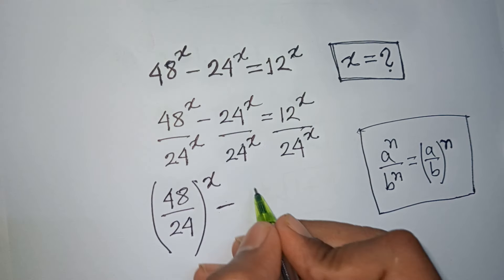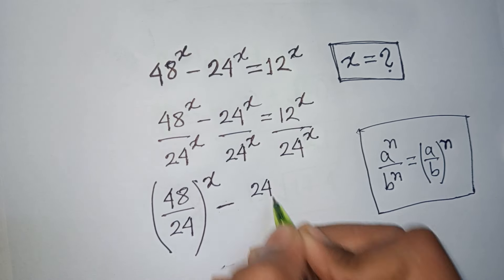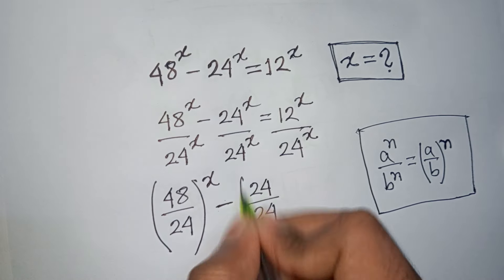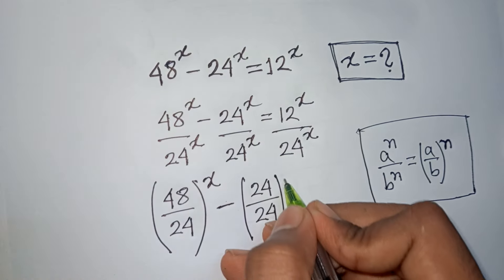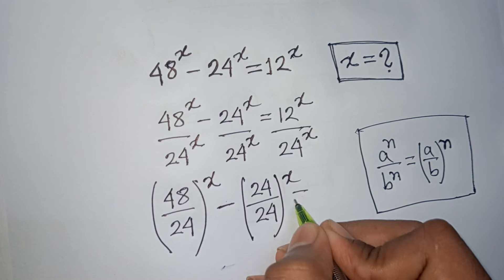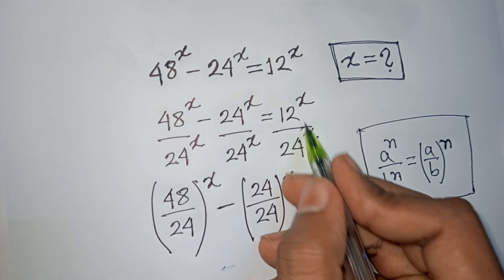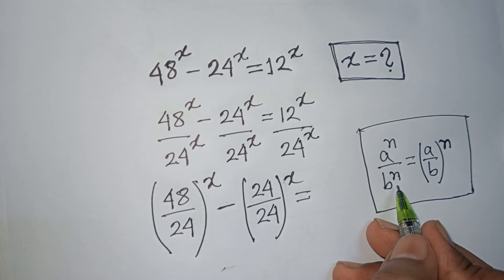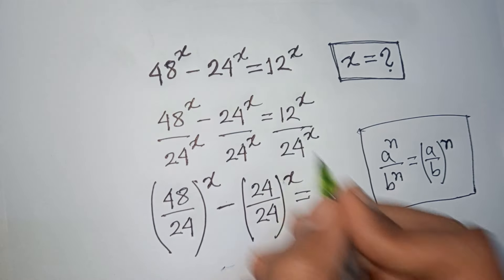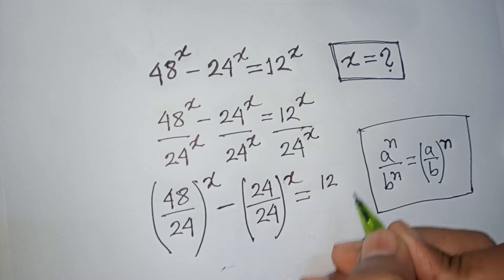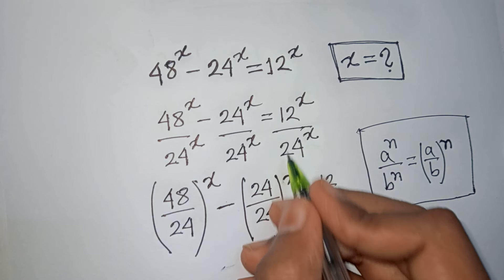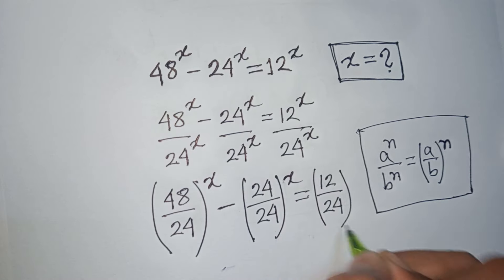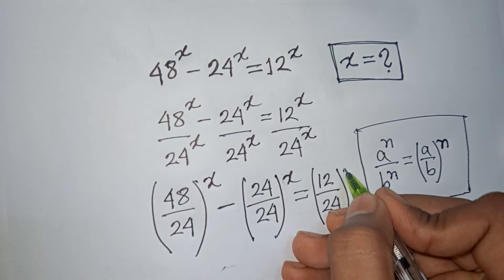For the second term, applying the same rule, we get (24/24)^x. On the right side, applying the rule again, we get (12/24)^x.